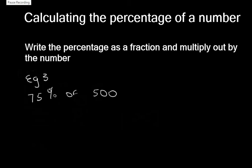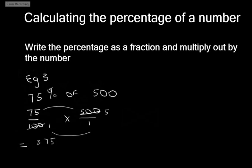Let's do one more example. Let's work out 75% of 500. We need to write 75% as a fraction, which is 75 over 100, and then multiply it out by 500 over 1. We've got to cancel using the bowtie method. 100 goes into itself one time and it goes into 500 five times. We're left with 75 times 5 over 1 times 1. 75 times 5 is 375, and 1 times 1 is 1. So our answer is 375.